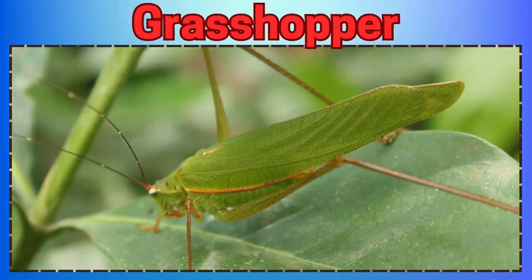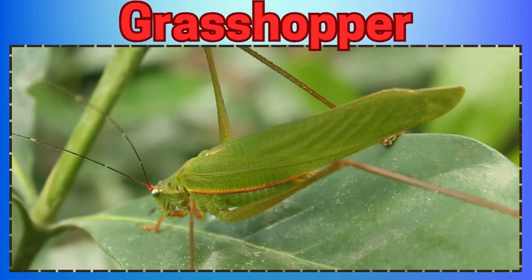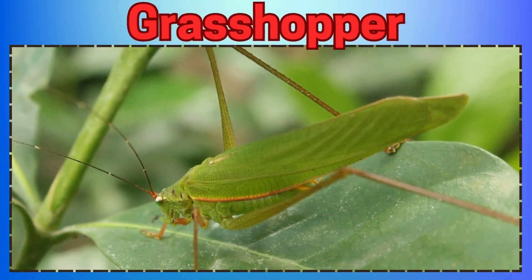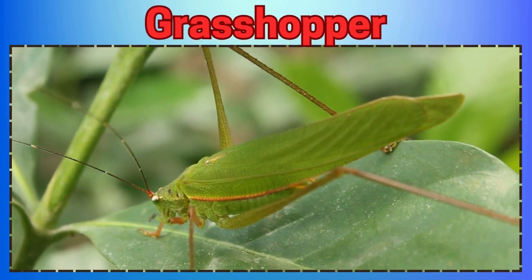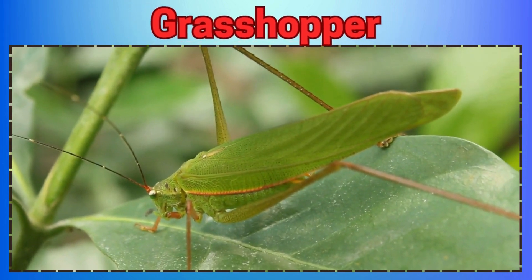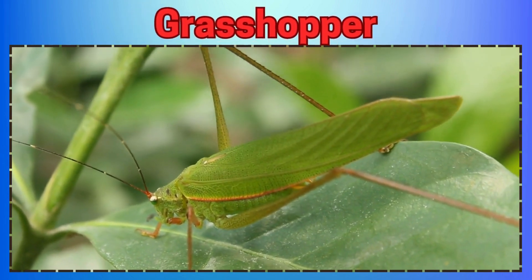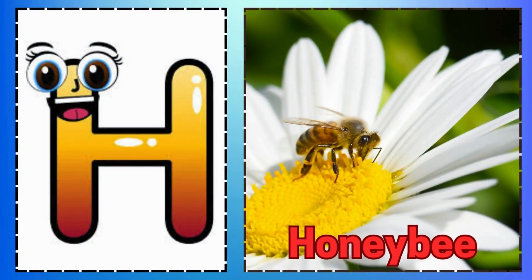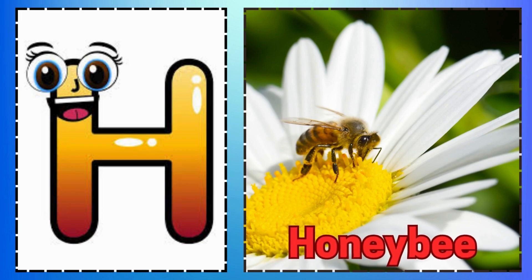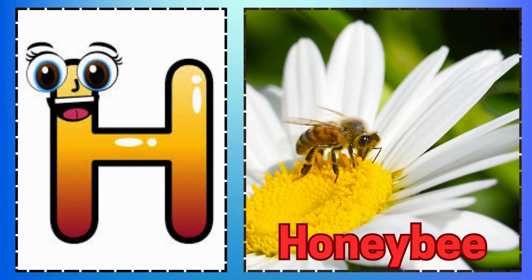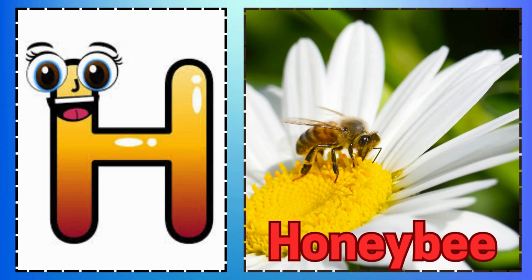E is for Earwig Hiding at Night. F is for Firefly Glowing so Bright. G is for Grasshopper Jumping up High. H is for Honey Bee.